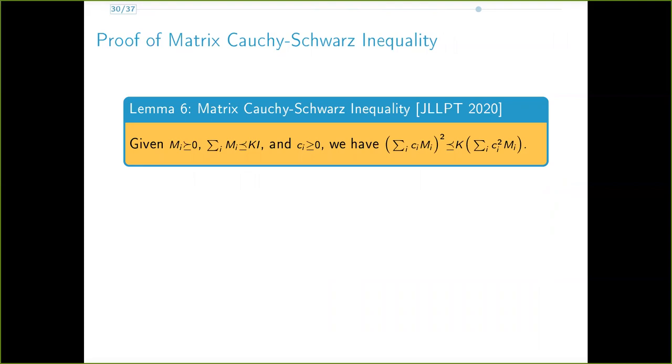We now present this matrix Cauchy-Schwarz inequality in a little bit more detail since we use it quite a bit. The statement of the lemma is as follows. You're given positive semi-definite matrices MI, which satisfy the condition that the sum of the matrices is upper bounded by k times the identity, and you're given these non-negative scalars CI. Then we have this matrix Cauchy-Schwarz inequality.